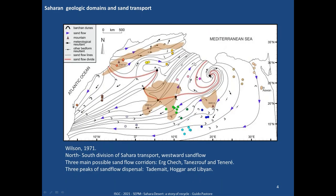We are trying to understand the provenance of this sand. This work by Wilson attempted to understand sand flow in the Sahara and outlined the presence of a divide from northern Sahara to southern Sahara in the subtropical high-pressure zone, coincident with high relief. He also identified the presence of sand flow corridors here in the south.